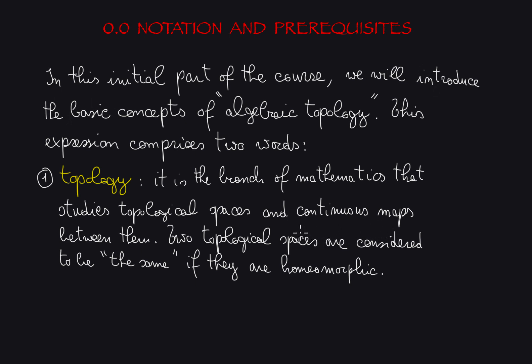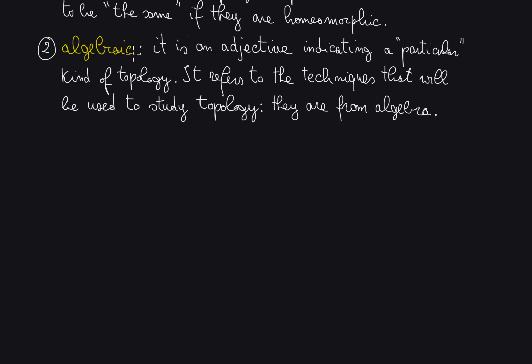Two topological spaces being homeomorphic means there are two maps going from one space to another and from the codomain of the first map to the domain, such that the composition of these two continuous maps is the identity on the domain and on the codomain. The second word is algebraic.